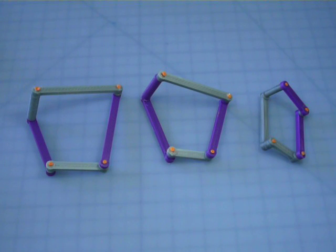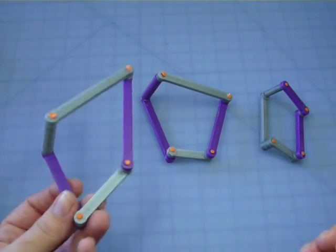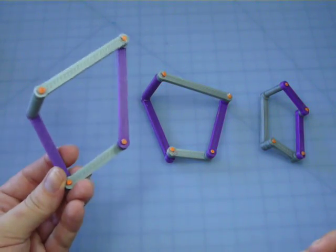All these different linkages meet the Grashof condition. For us, this means that one of these bars can spin. It's important since we want to attach it to a motor. Our input source will be continuous rotary motion, so we need to make sure it can use that motion.